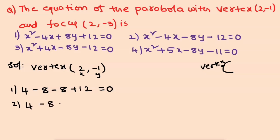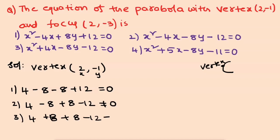For the second option: 4 minus 8, then 8 into minus 1 plus 8 minus 12 — this is satisfied. For the third option: 4 plus 4, then 4 plus 8 minus 8 into minus 1 plus 8 minus 12 — this is not 0, so LHS does not equal RHS.